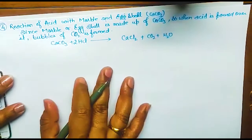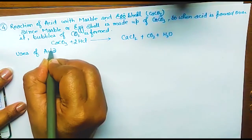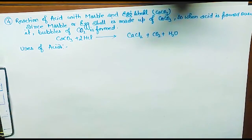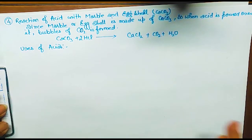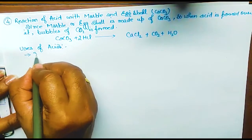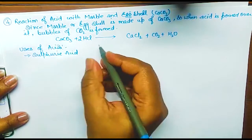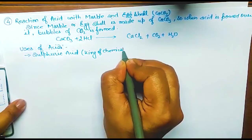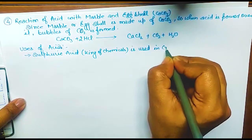Now, uses of acids. Sulfuric acid H2SO4 is also known as the King of Chemicals. It is used in car and automobile batteries, also in inverters used at home, and for the preparation of many other compounds.